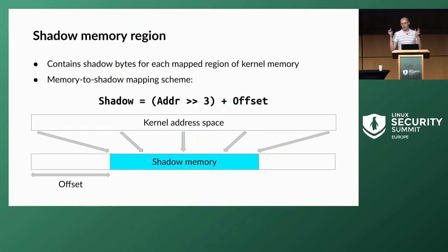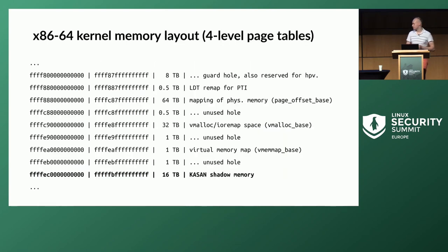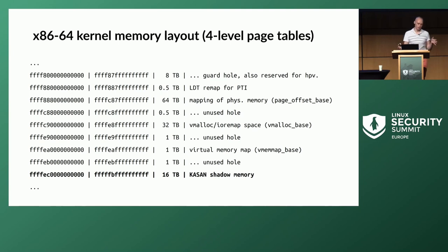All of the shadow bytes are contained in a special region called the shadow memory region. This region is contiguous, and to get the address of a shadow byte matching a kernel memory address, you shift the kernel memory address by 3 (divide by 8) and then add the offset of where shadow memory starts. On x86, you can find this region in the mm/rst documentation file — the shadow memory is 16 terabytes, which makes sense because the kernel address space for 4-level page tables is 128 terabytes, divided by 8 gives 16.